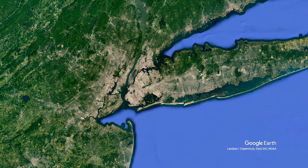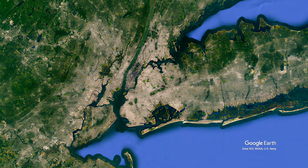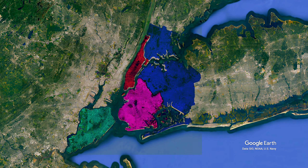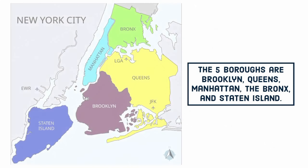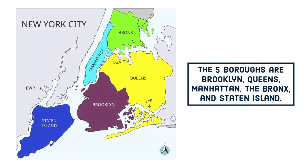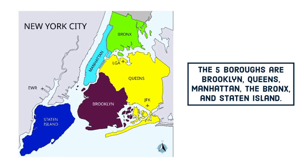The city is divided into five boroughs, each functioning like a smaller city within the larger city. The five boroughs are Brooklyn, Queens, Manhattan, the Bronx, and Staten Island.